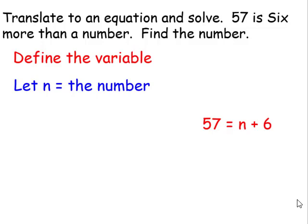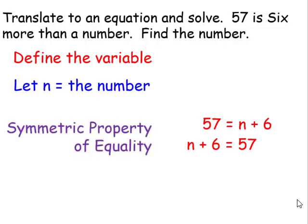Now since my variable's on the right-hand side, I'll use the symmetric property to write it on my left-hand side. So instead of writing 57 equals n plus 6, now I have n plus 6 equals 57. I'll subtract 6 from both sides. This will leave me with n equals 51.